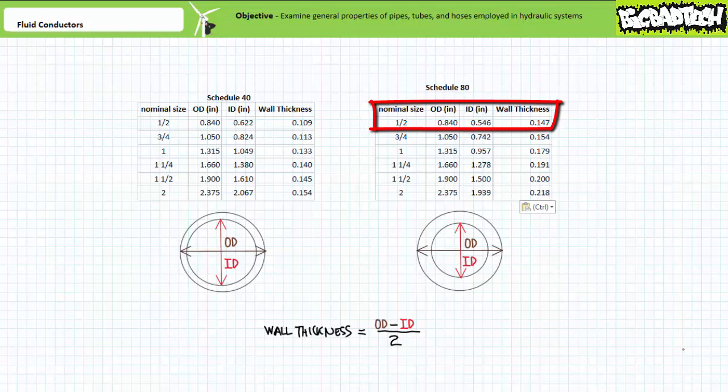You will note that the OD of the related nominal half inch pipes is the same and the ID is comparatively smaller for the higher schedule pipe. This correlates to a thicker wall, thus suitability for higher pressure applications.